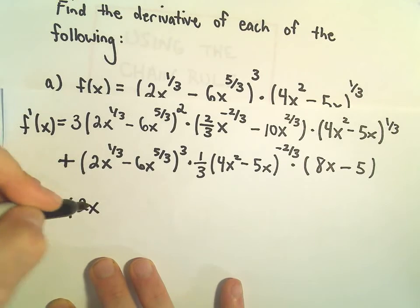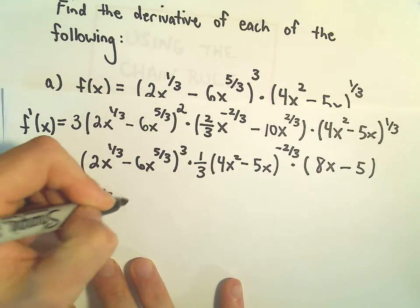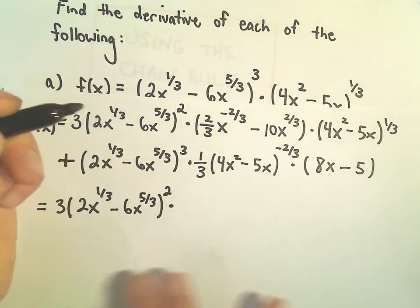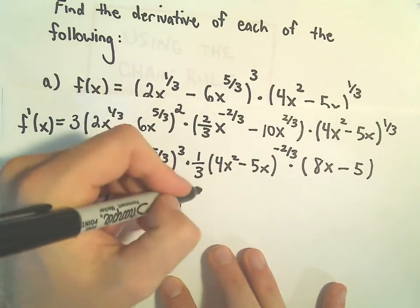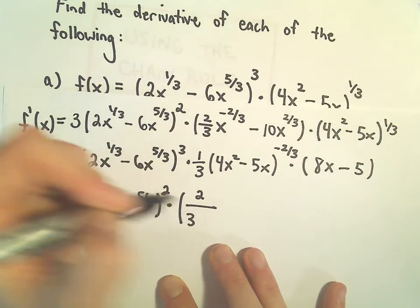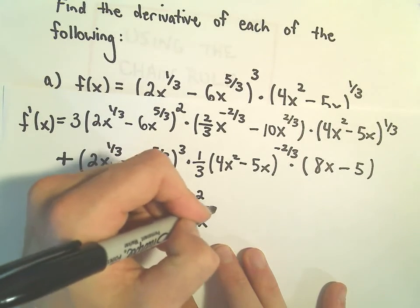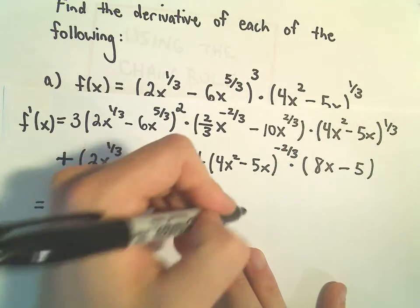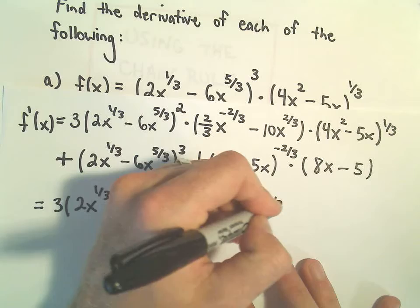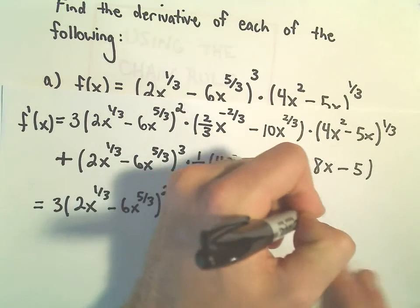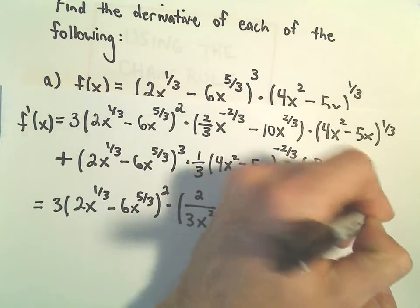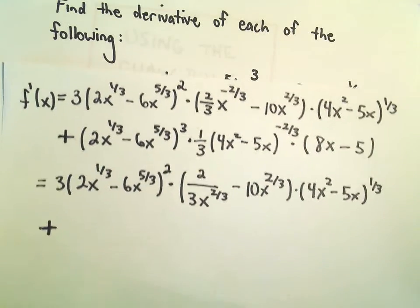So you have 3 times 2x to the 1/3 minus 6x to the 5/3 squared, all multiplied. So we could write 2 over 3x to the negative 2/3 as 2 over 3x to the positive 2/3, then minus 10x to the 2/3. And there's our big plus sign.